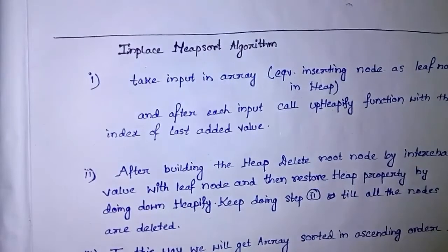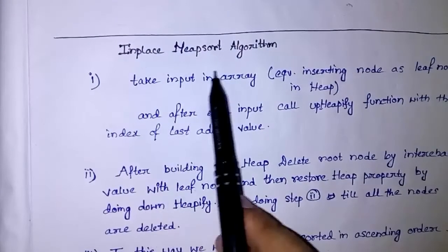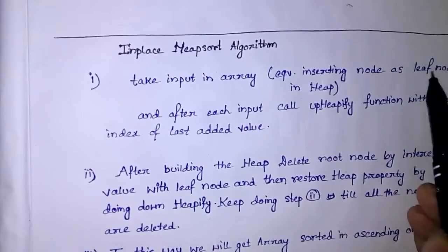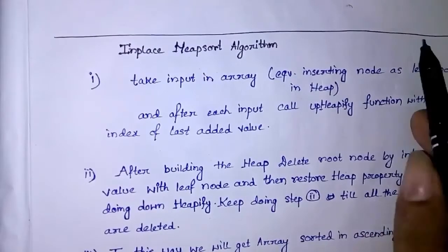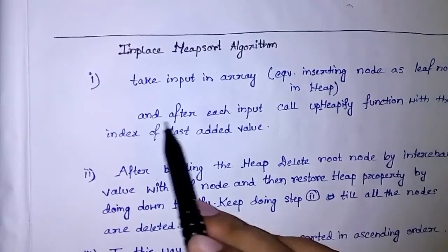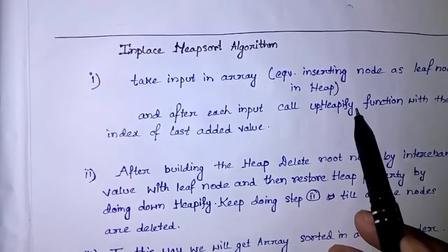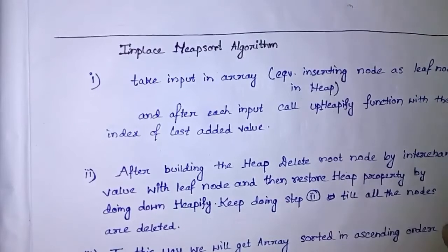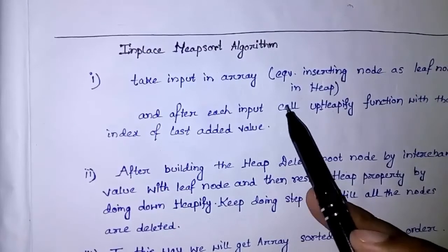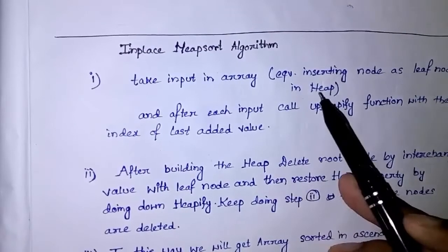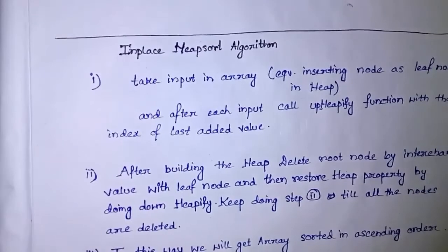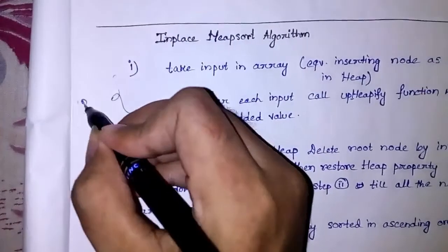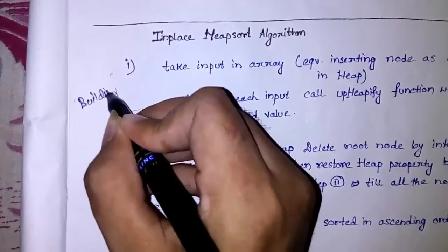So what is the first step? We will take input in the array, which is equivalent to inserting the node as a leaf node in the heap. After each insertion, we will be calling the upHeapify function with the index of the last added value to restore the property of the heap. This process is known as building a heap from the array.